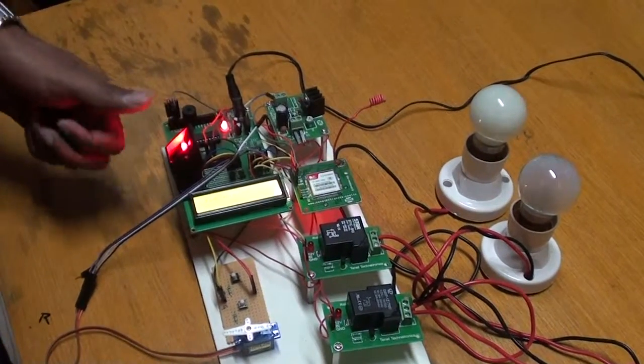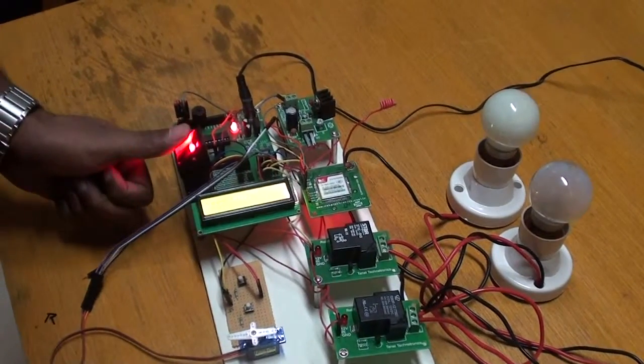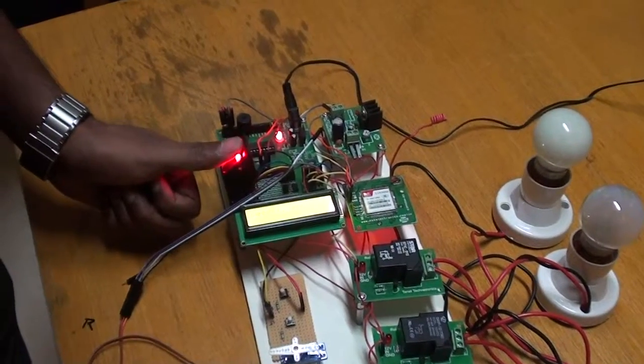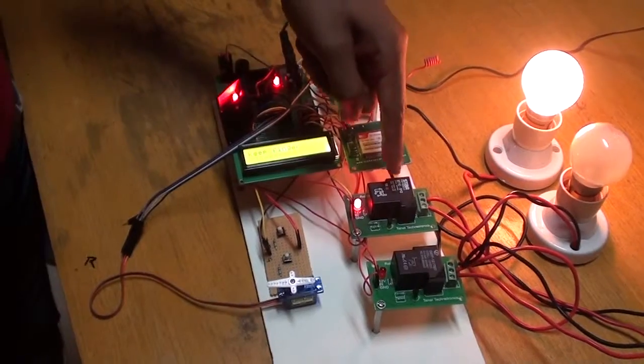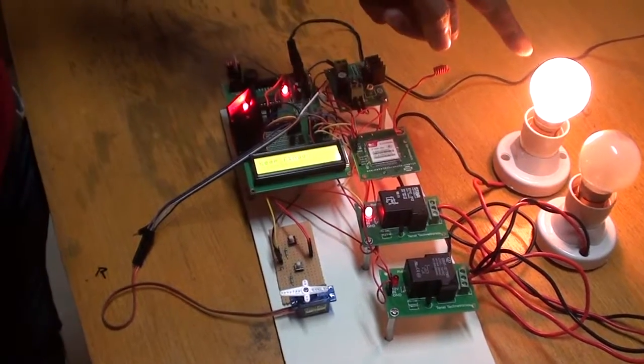We can have a demo. Suppose I have my fingerprint in the database. See, this bulb will turn on. That relay will trigger and this will turn on.